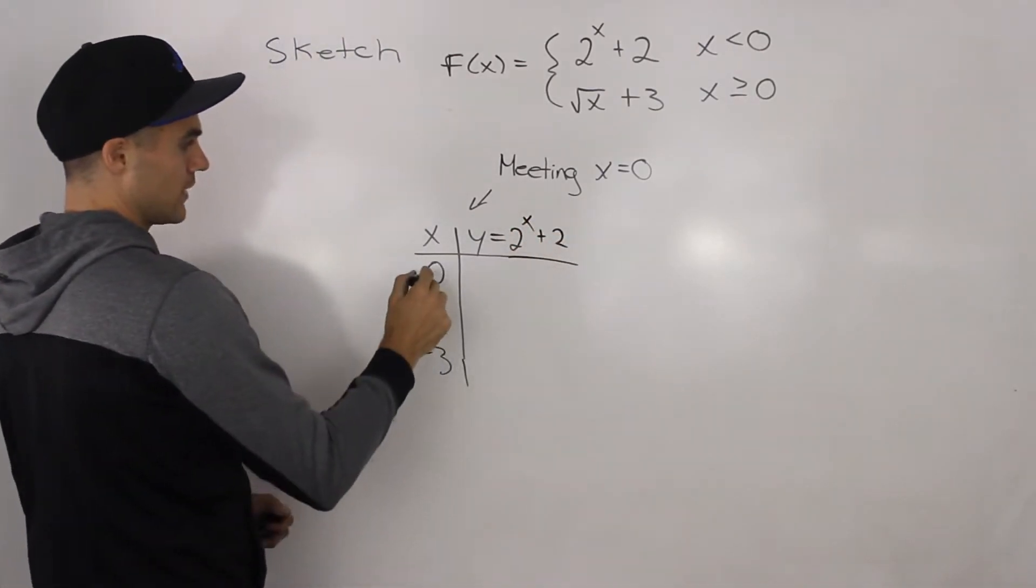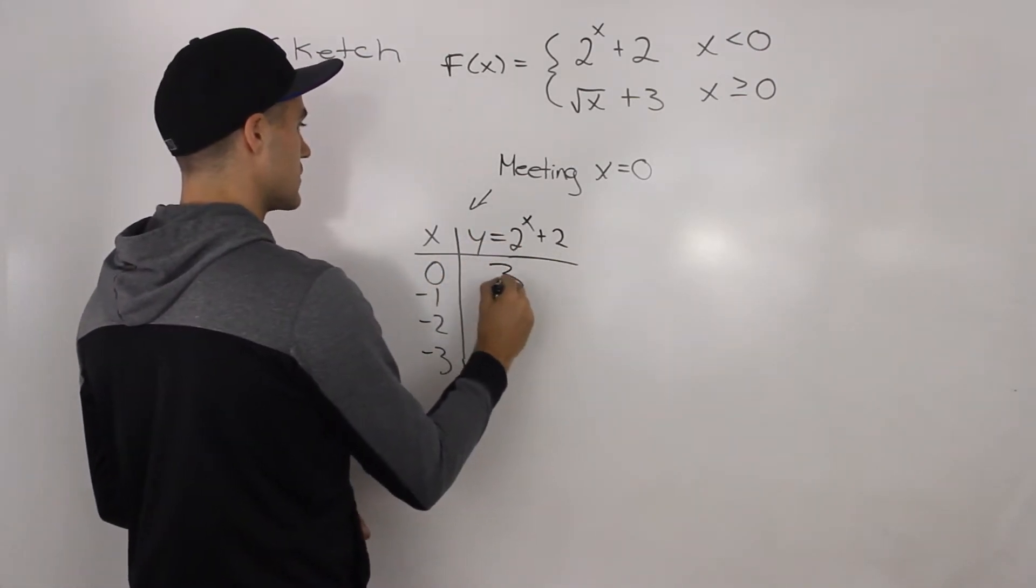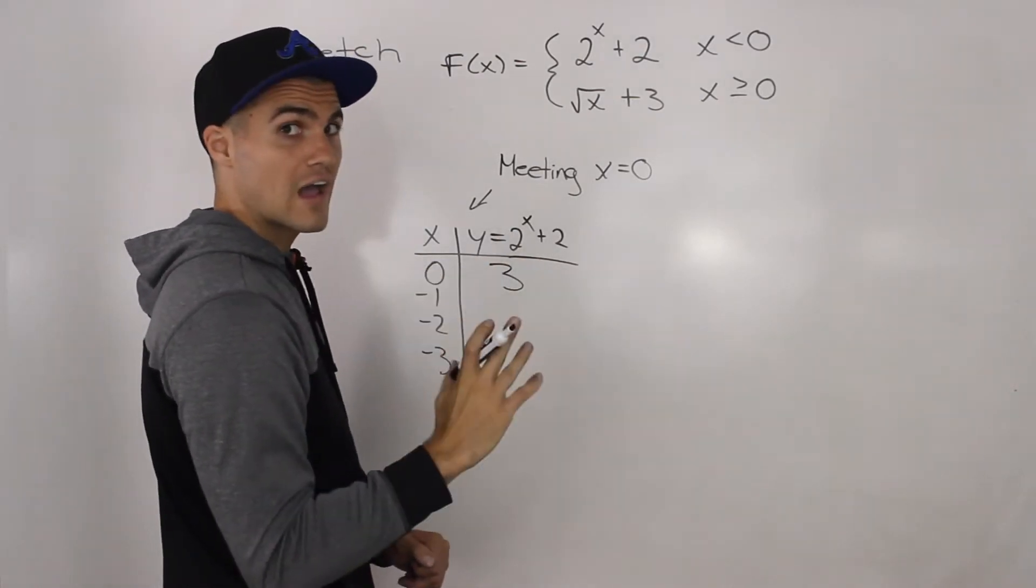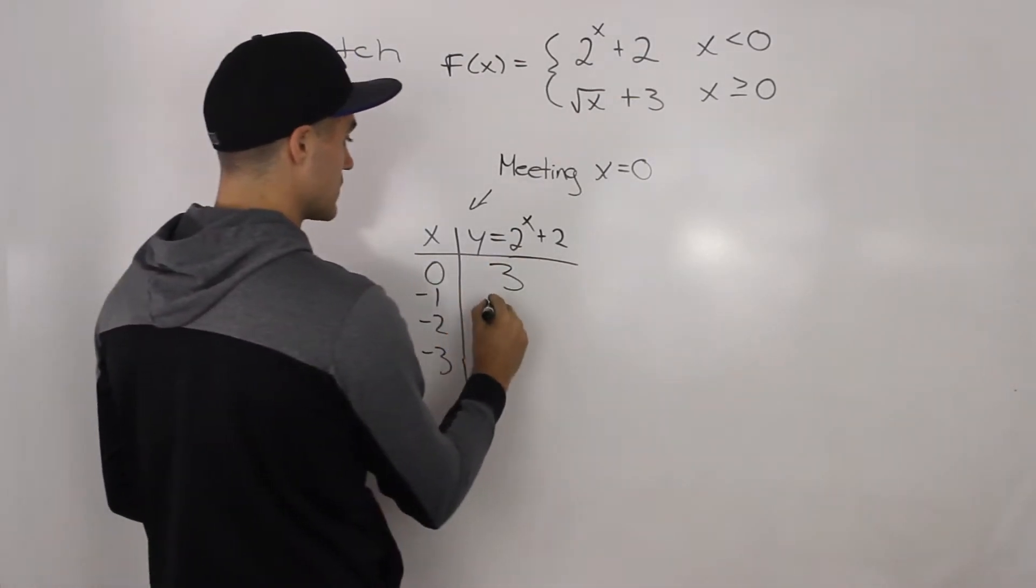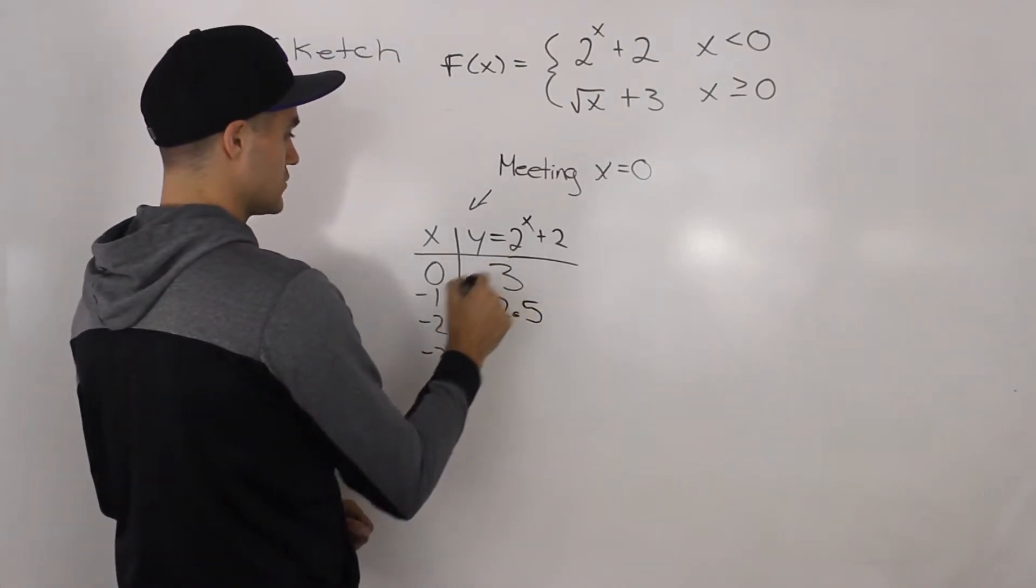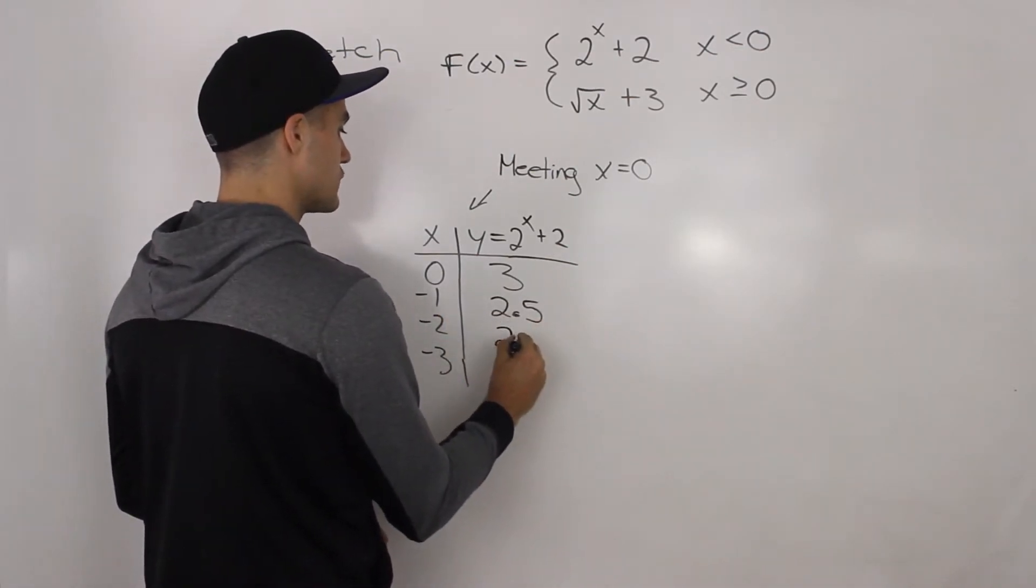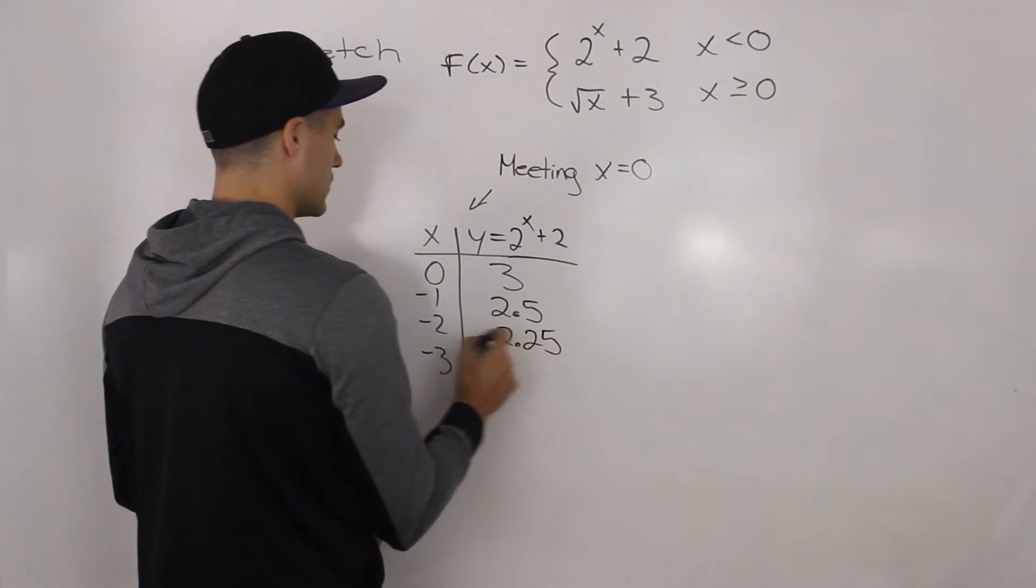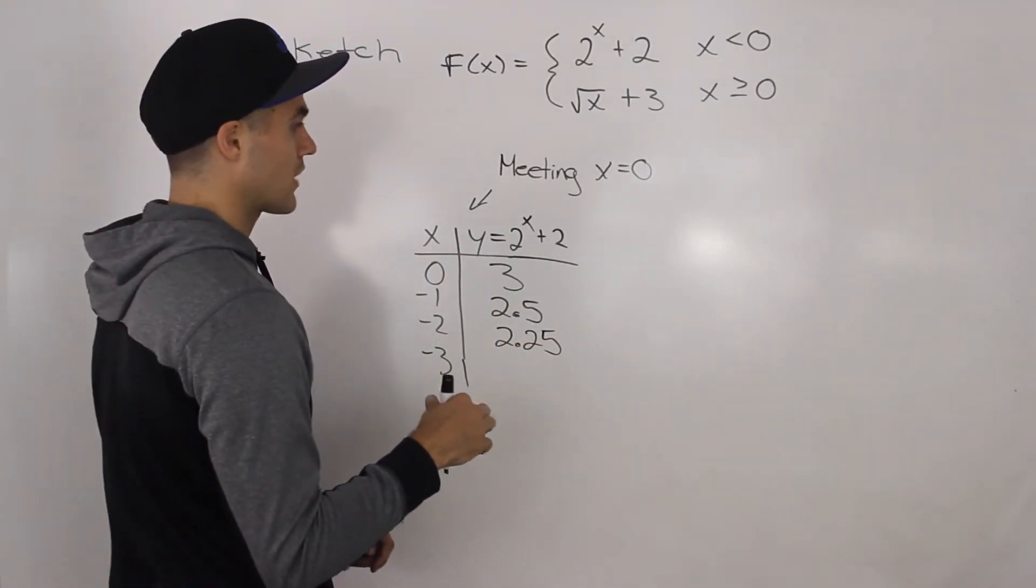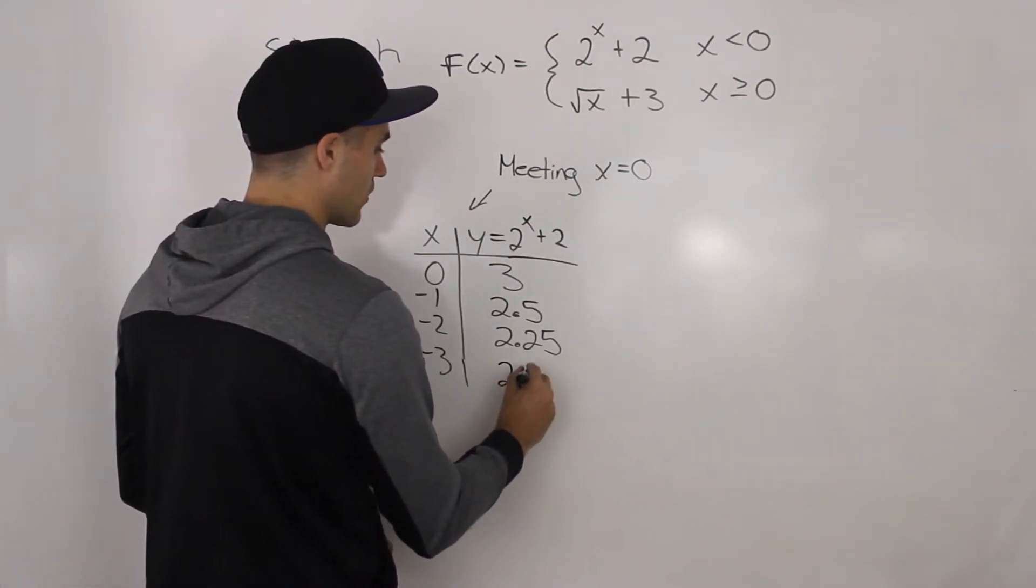When we input this, 2^0 is 1 plus 2 is 3. 2^(-1) is 0.5, and then 0.5 plus 2 gives us 2.5. And then 2^(-2) is 0.25 plus 2 gives us 2.25. 2^(-3) is 1/8. 1/8 is the same as 0.125 plus 2 gives us 2.125.